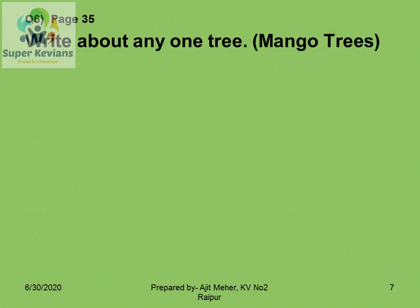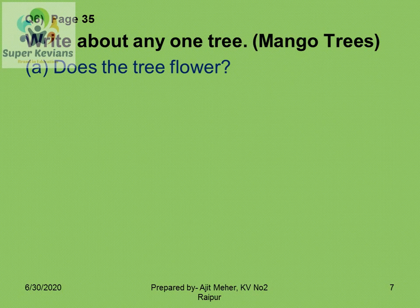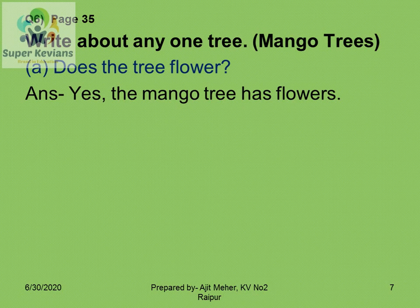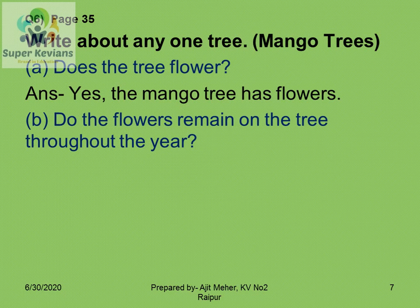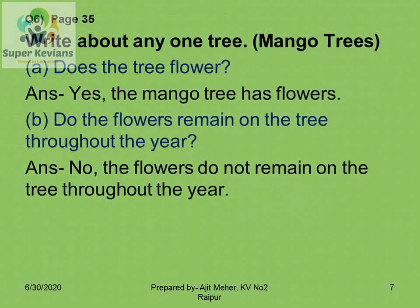The next question: write about any one tree — it is your own choice. You have to write five sentences about a tree. Here I have taken the mango tree. Does the mango tree flower? Yes, the mango tree has flowers. Do the flowers remain on the tree throughout the year? No, the flowers do not remain on the tree throughout the year — they remain only in some seasons.